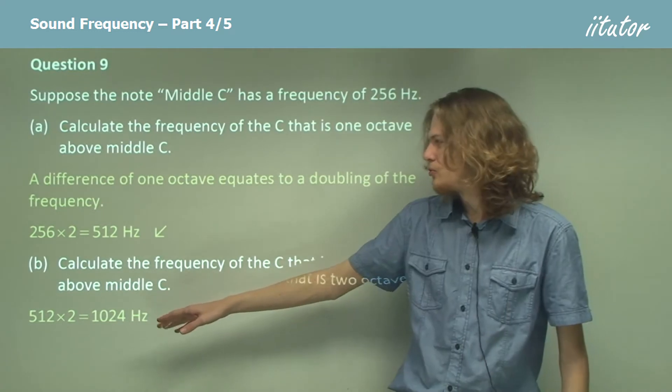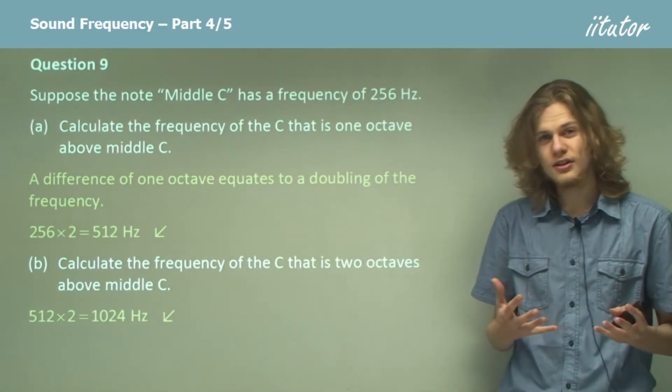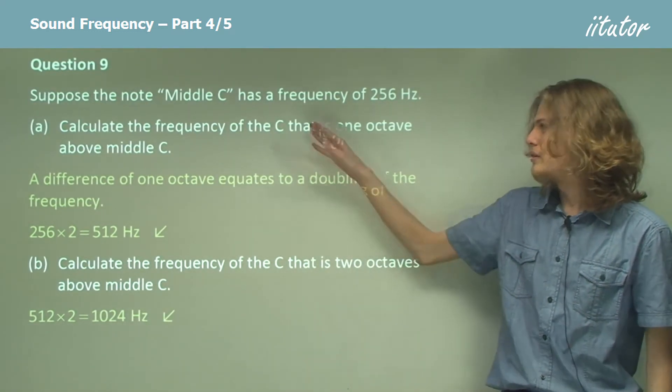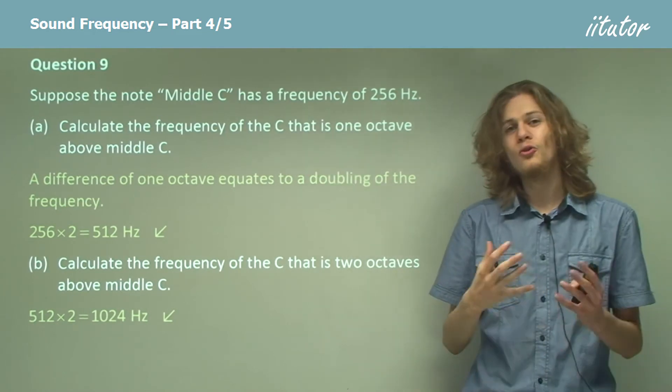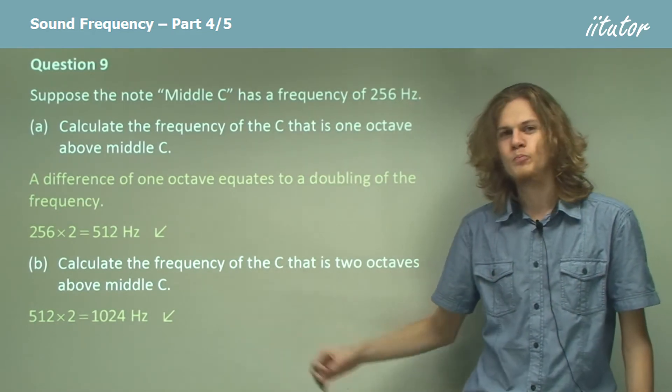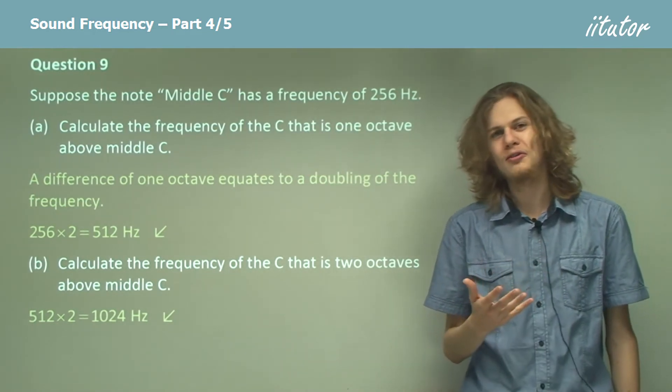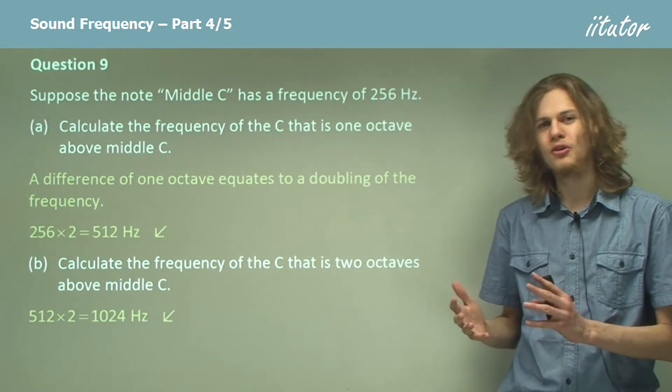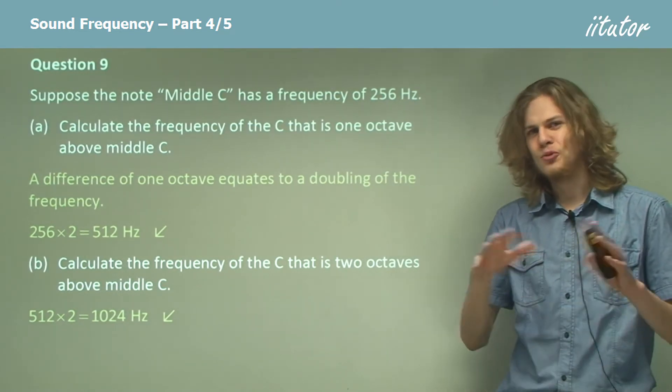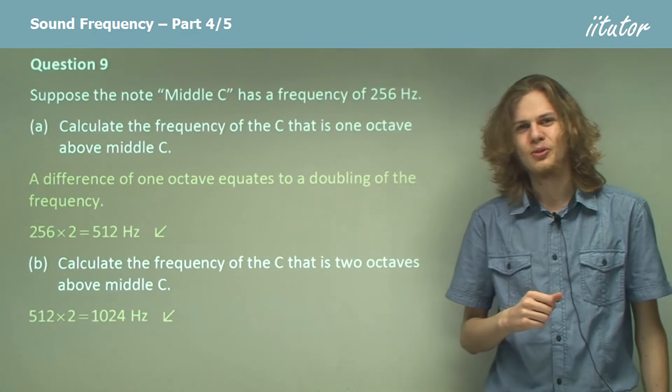If we were to add 512 to 256, which is the interval between these two C's, then we would not in fact get the next C. We would get one of the harmonic series or one of the elements of the harmonic series, but that's more sort of advanced acoustics so I'll leave it here for now.